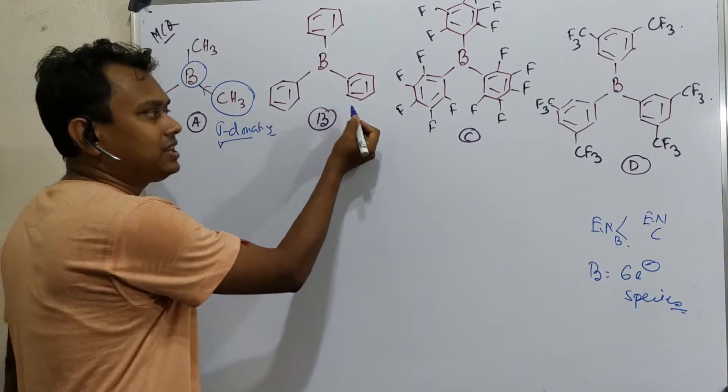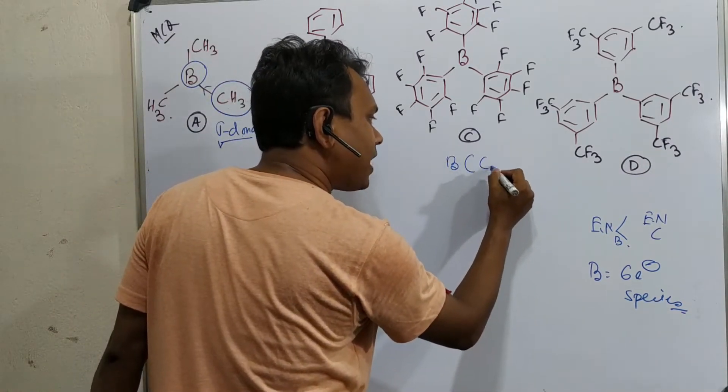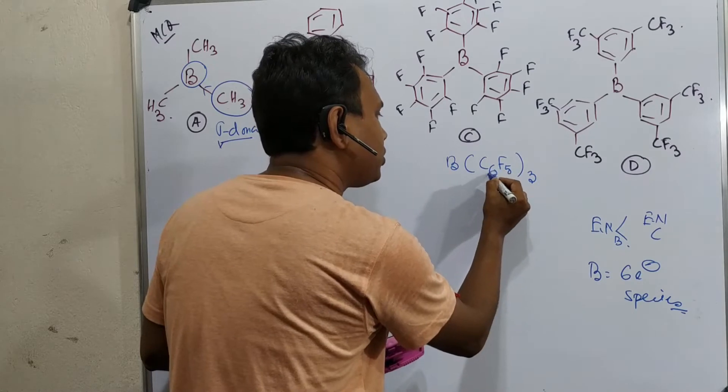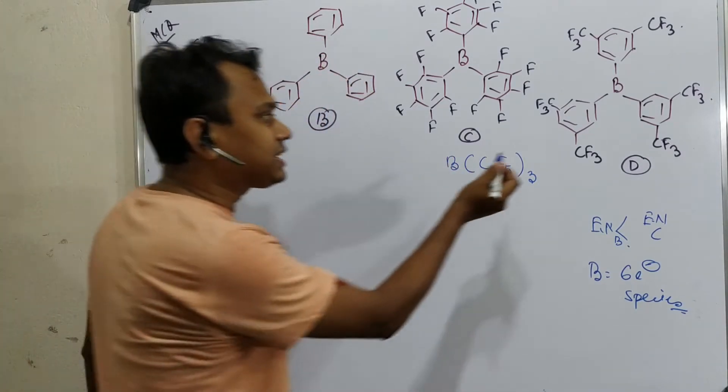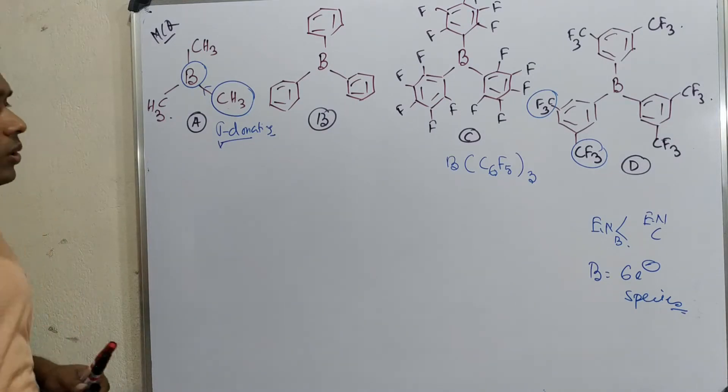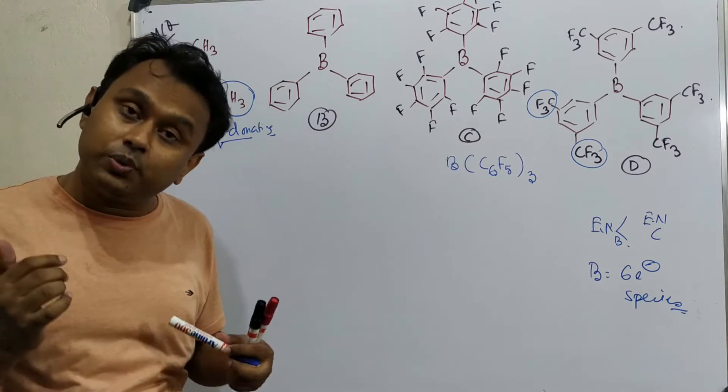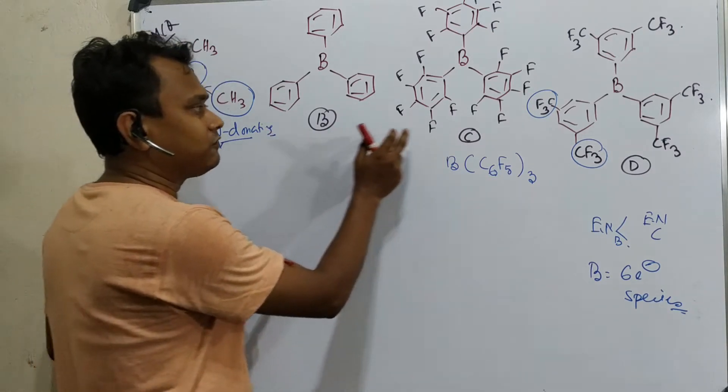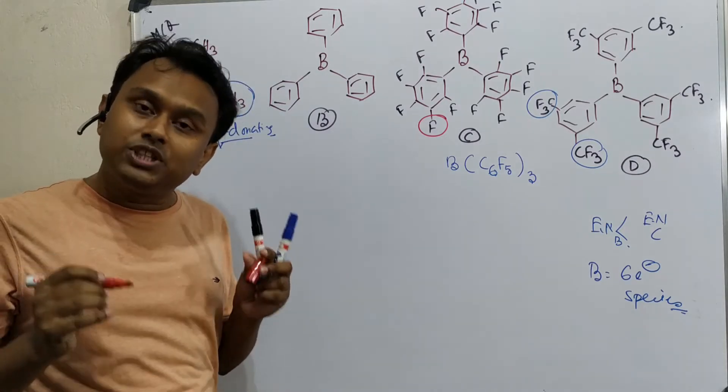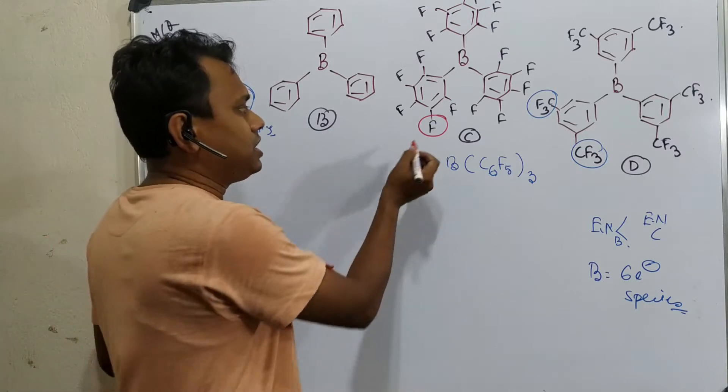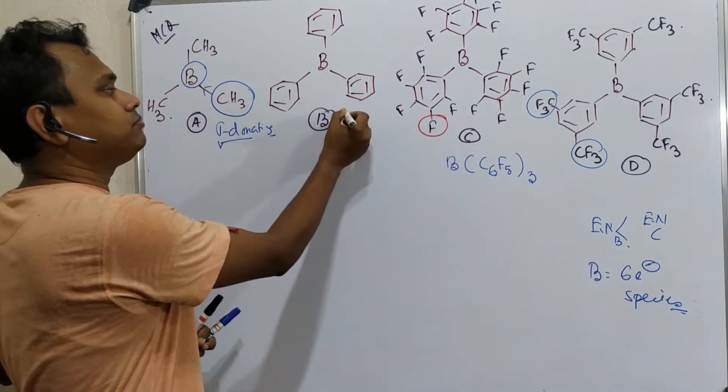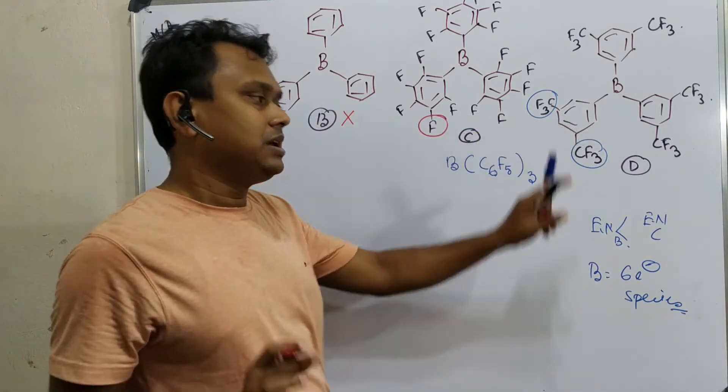If you look at option B, this is a simple phenyl. In option C, this is pentafluorophenyl (C6F5). And in option D, this is actually two meta and three CF3 substitutions. Now we know that fluorine's electronegativity is very high because it is the most electronegative atom in the periodic table. So compare this benzene versus these two. This fluorine is more withdrawing. We know previously that halogens are more withdrawing, means halogens are ortho-para orienting but deactivating.